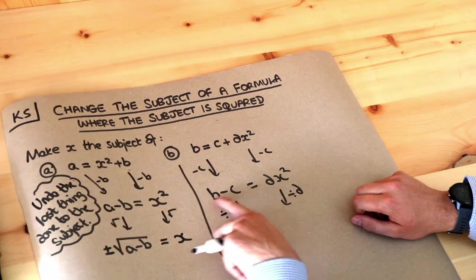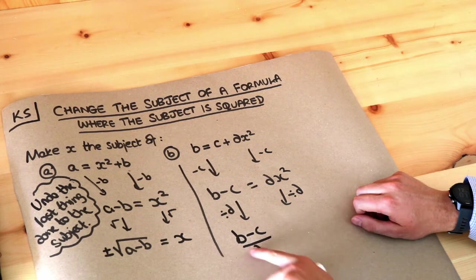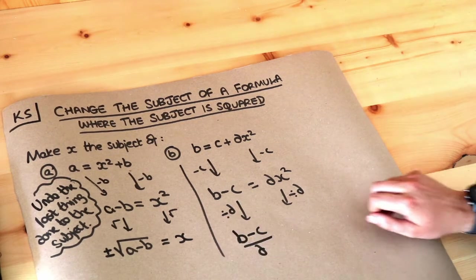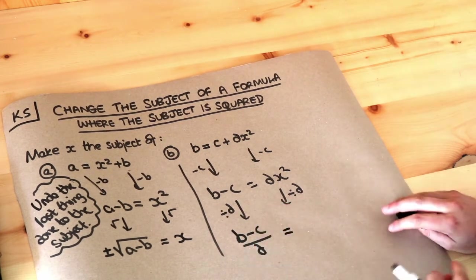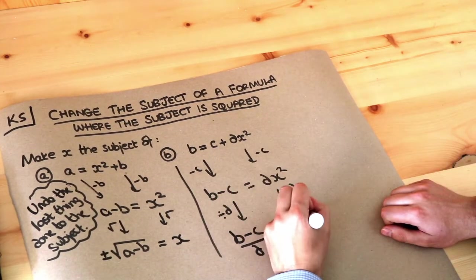So this over d is b minus c all over d. Remember, we write divisions in algebra using fractions, we don't use a divide symbol. And then x squared times d divided by d gets rid of d times d, leaving just x squared.